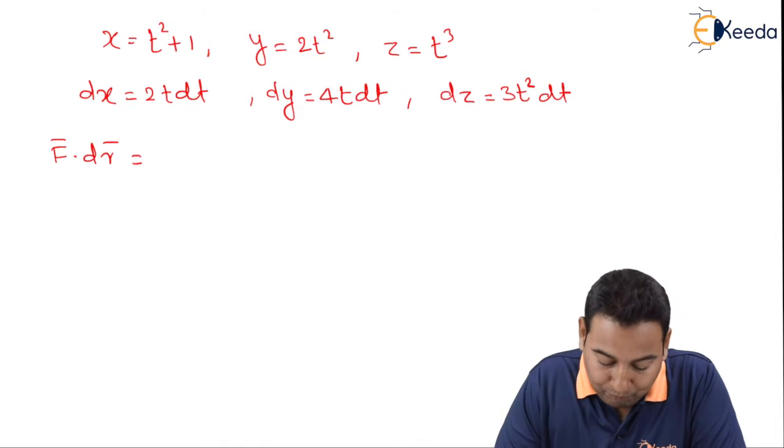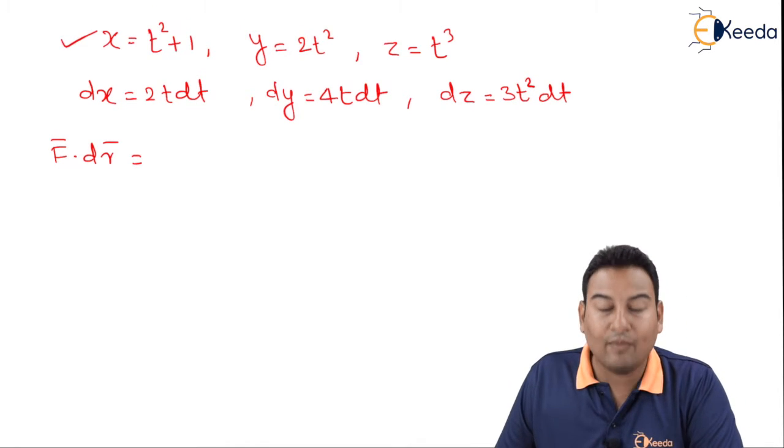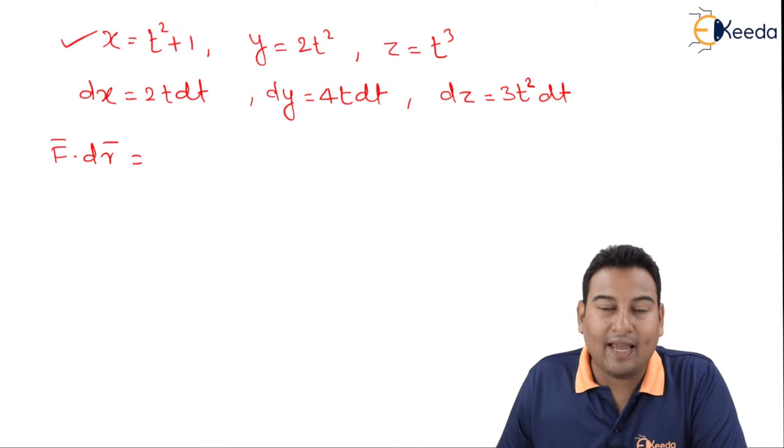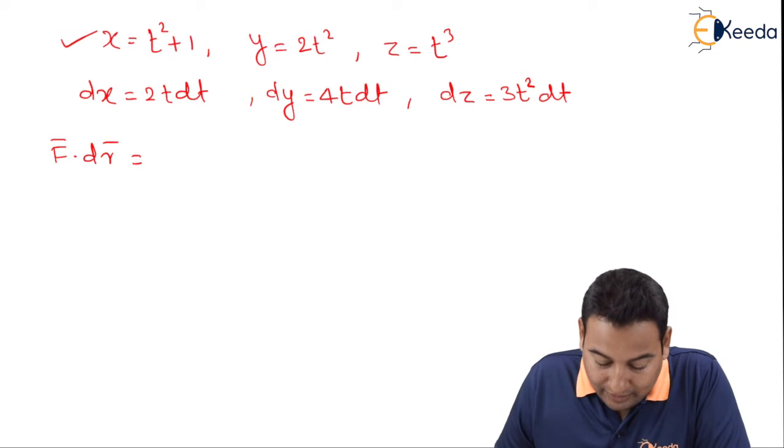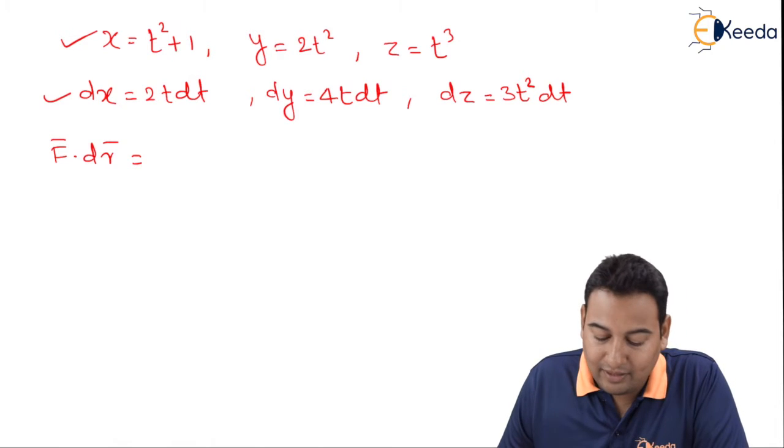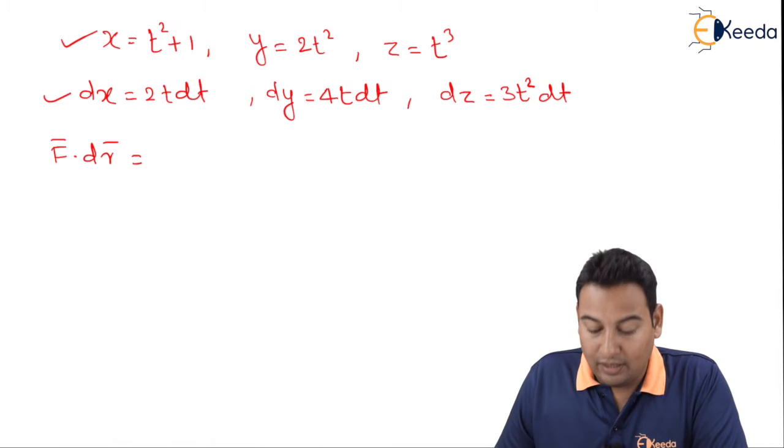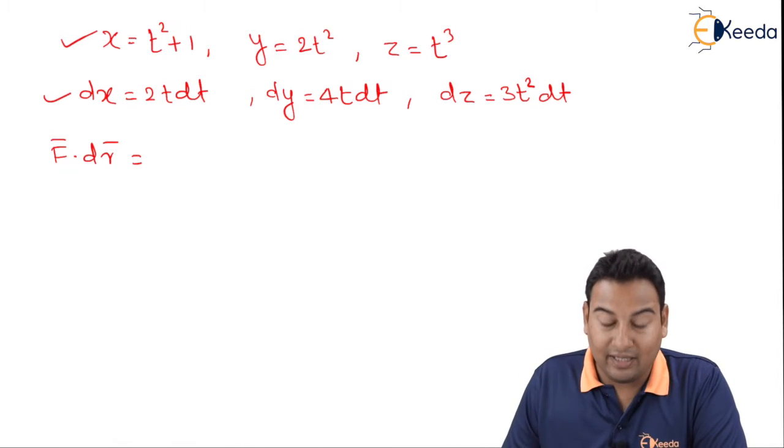Let's convert the entire problem in terms of t. Whenever I'm going to see x I'm going to replace with t square plus 1, whenever I'm going to see y I'm going to replace by 2t square, and whenever I'll get z I'm going to replace by t cube. dx with 2t dt, dy with 4t dt, and dz with 3t square dt. Let's do that.